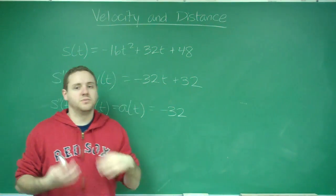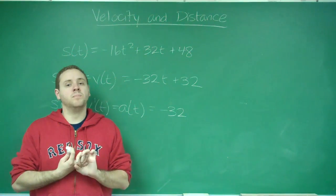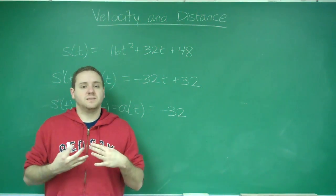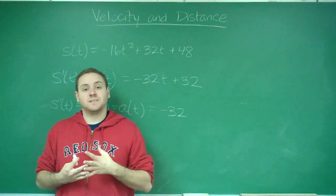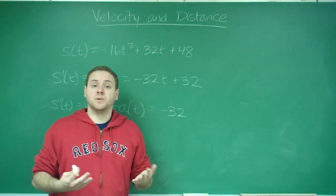And that can tell you a variety of things in a given distance velocity acceleration type of problem. Keep in mind that when they say things like the object stops, when it stops, that means its velocity is equal to zero.